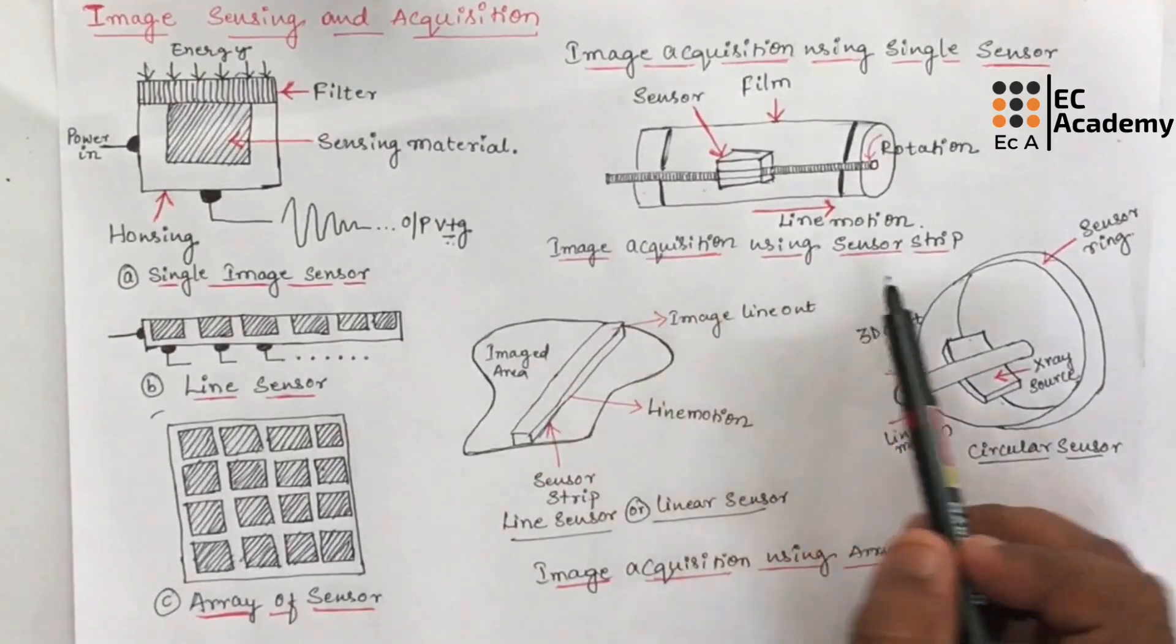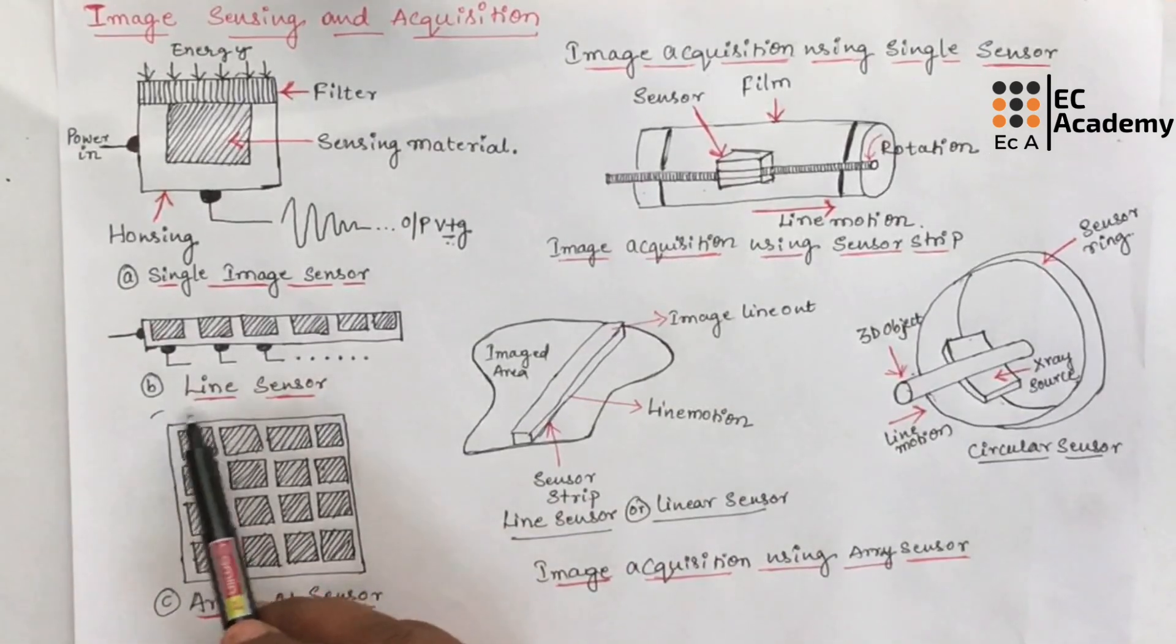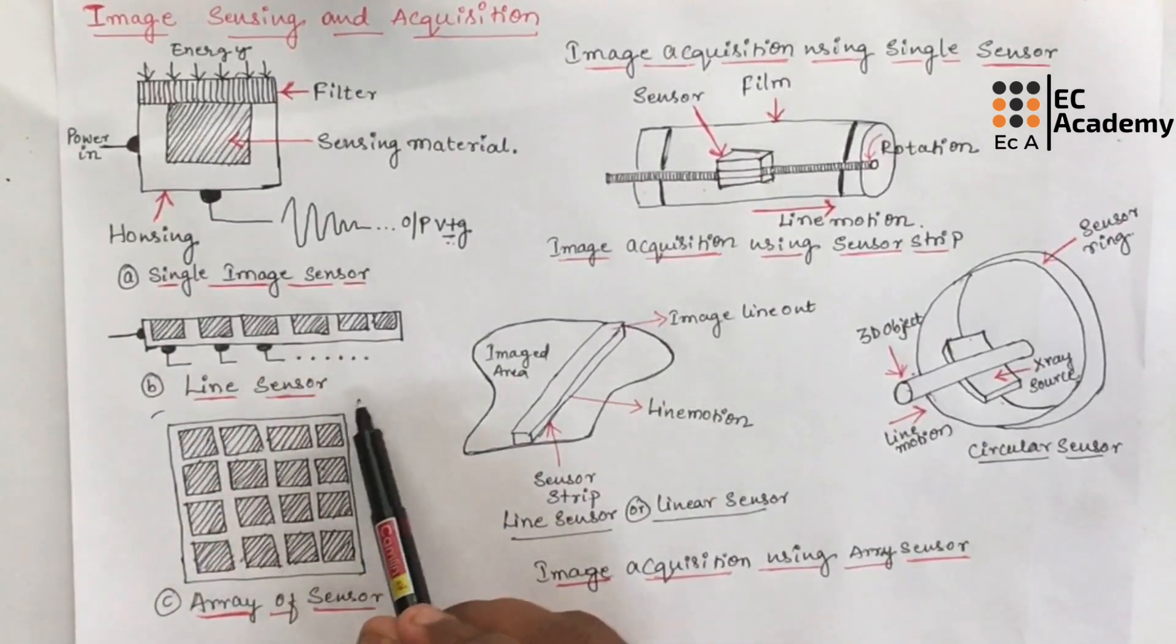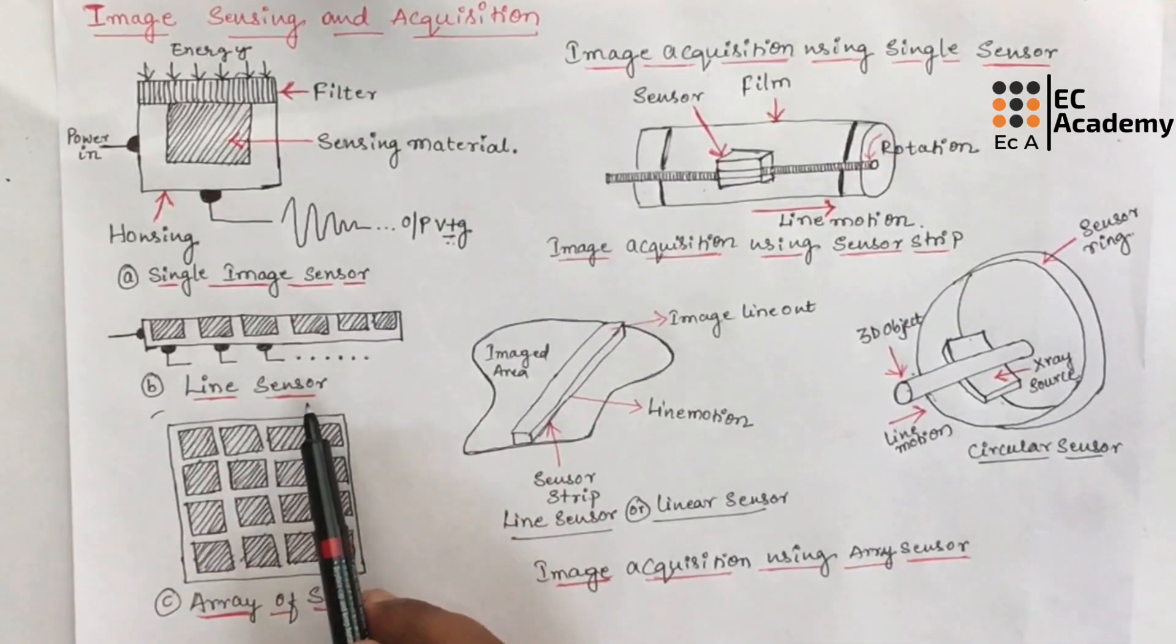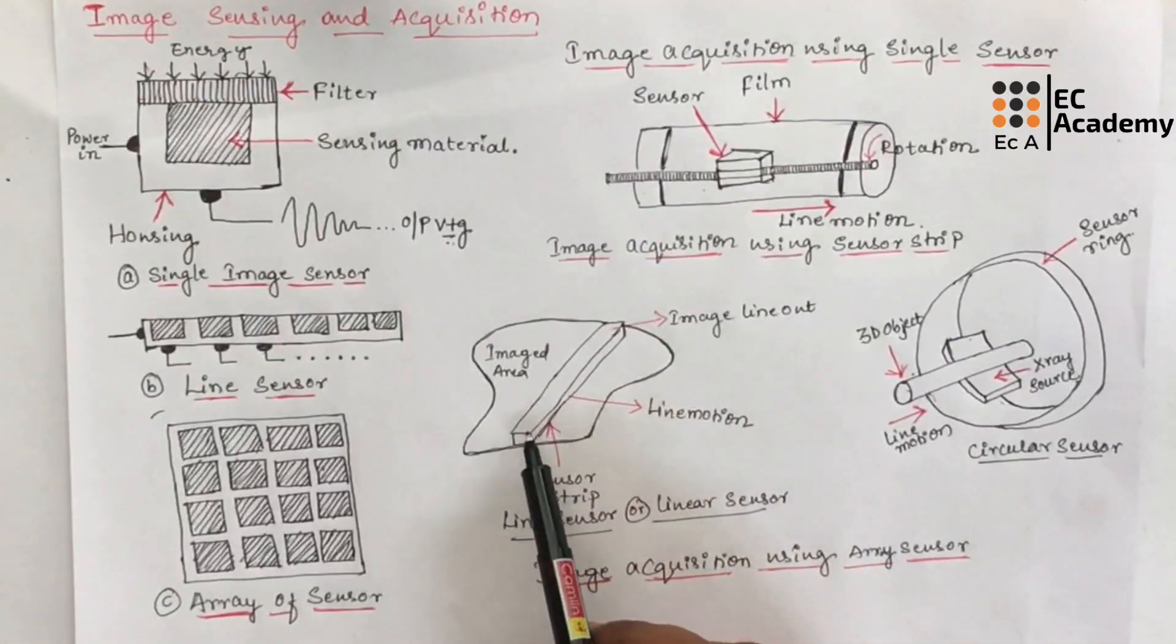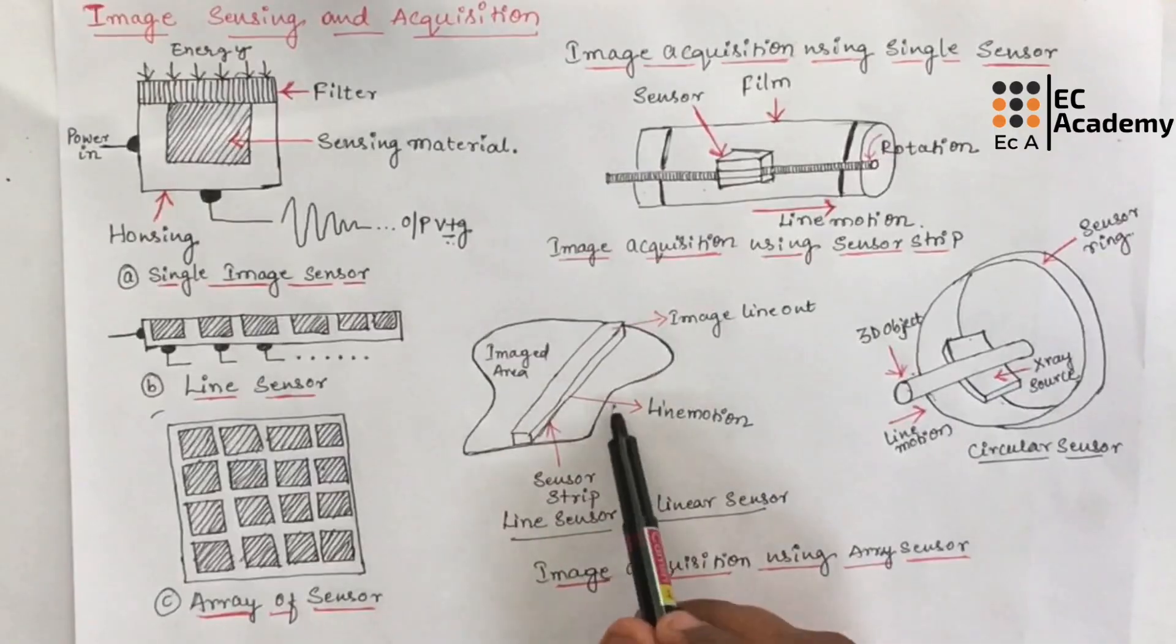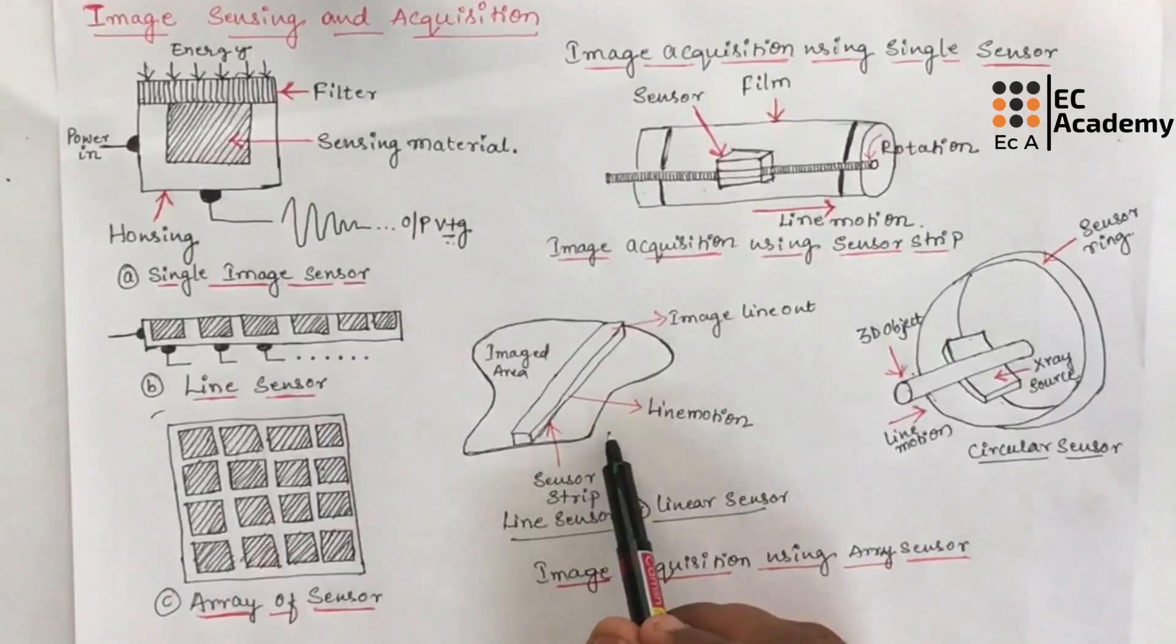Now we will see image acquisition using sensor strip. Line sensors are shown in figure B. These type of sensors are most popular and frequently used. This strip provides the image element in one direction and the motion perpendicular to the strip provides image in another direction as you can see in this figure. These type of sensors are used in most flat bedded scanners.